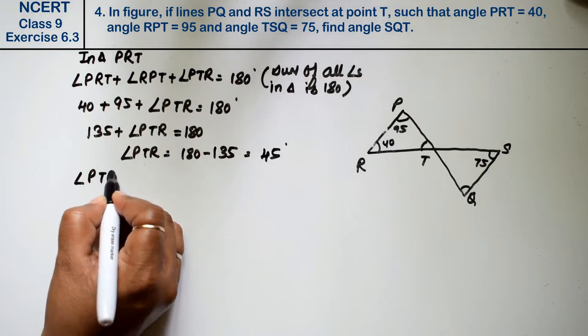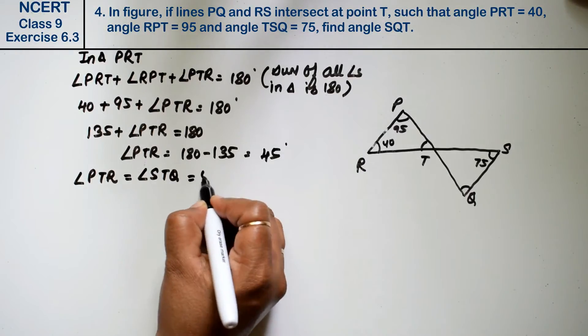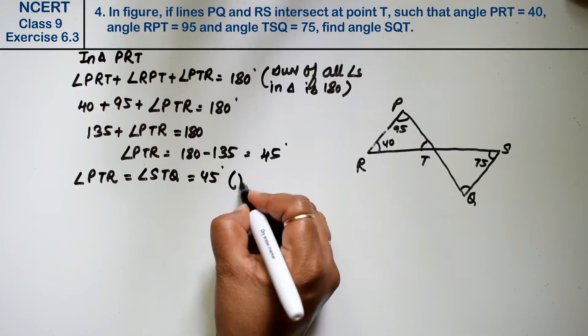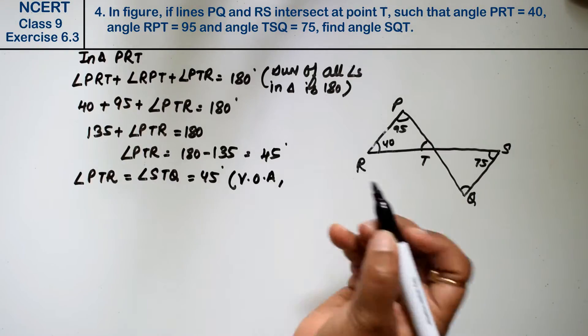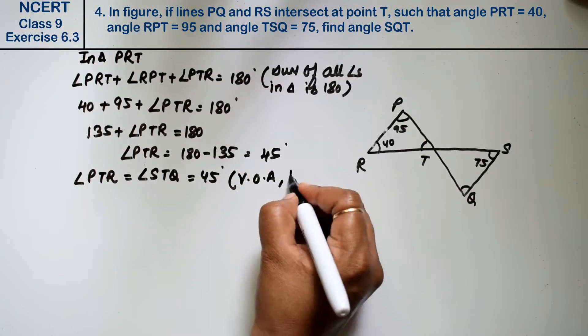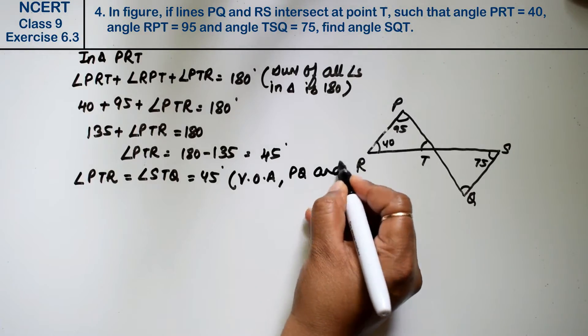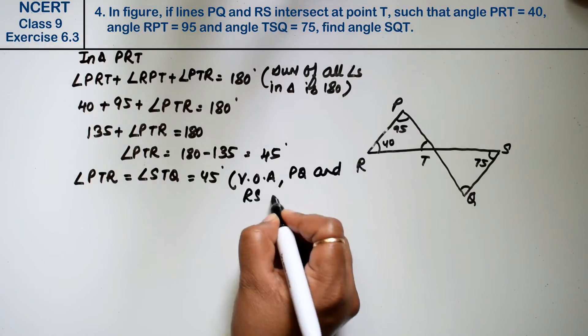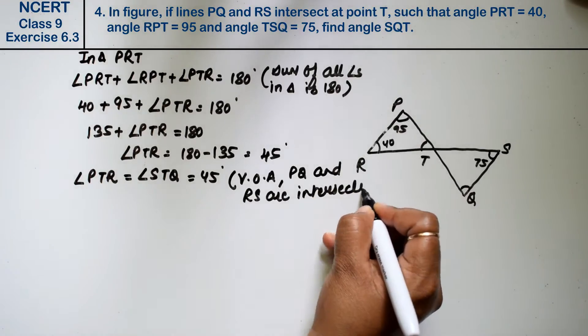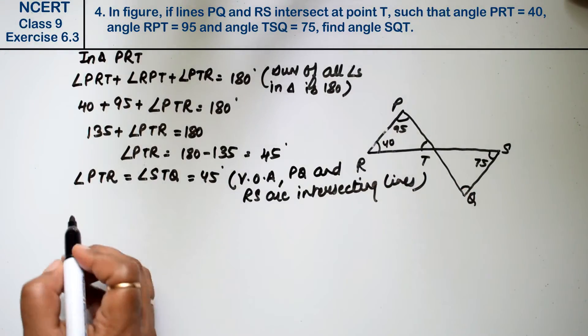then angle STQ is also 45 degrees. Why? Because these are vertically opposite angles, and PQ and RS are intersecting lines. Intersecting lines. Right. These two angles are equal.